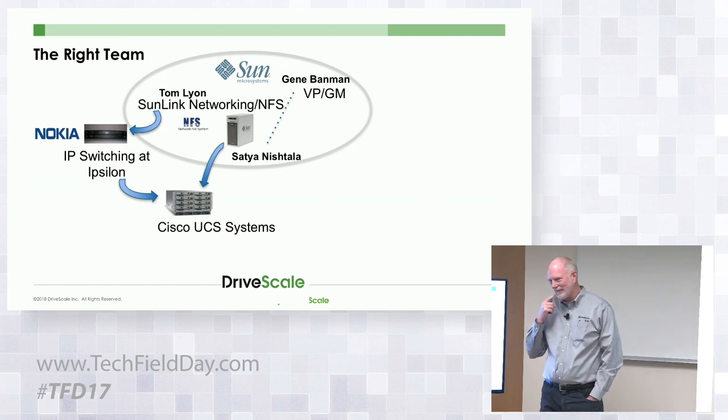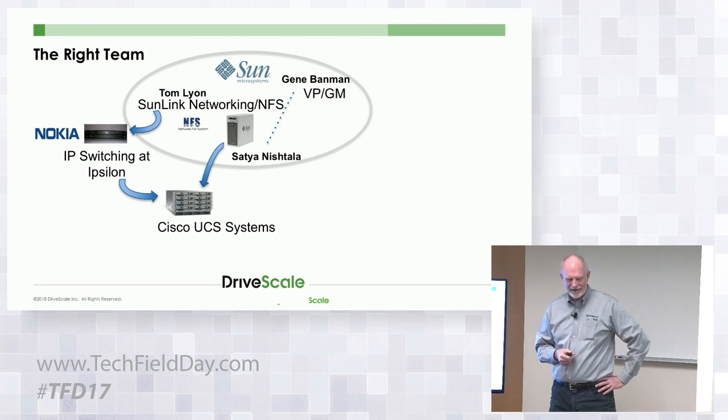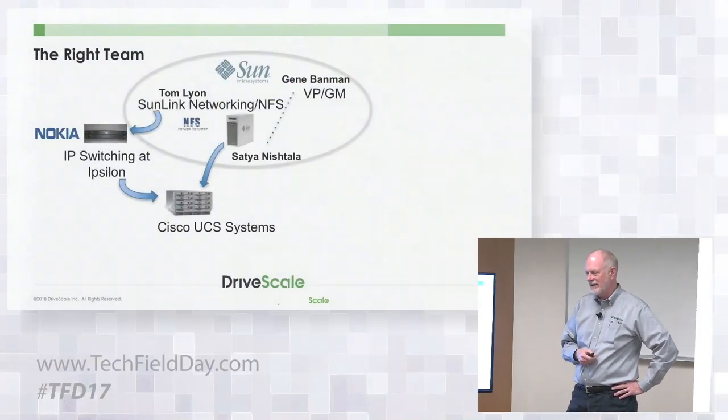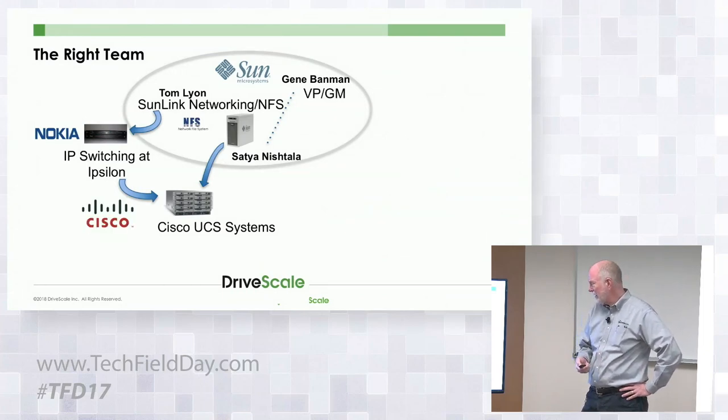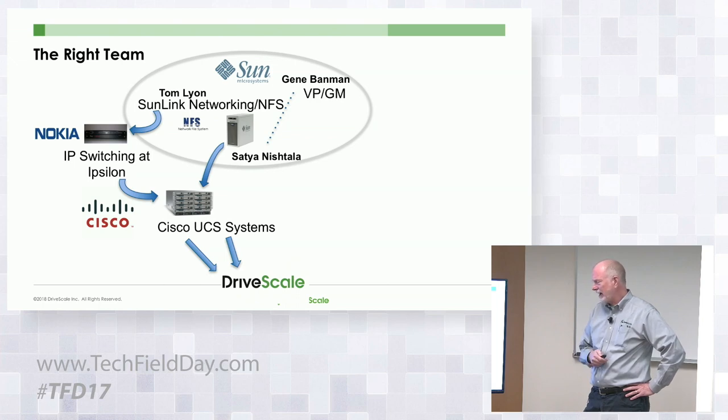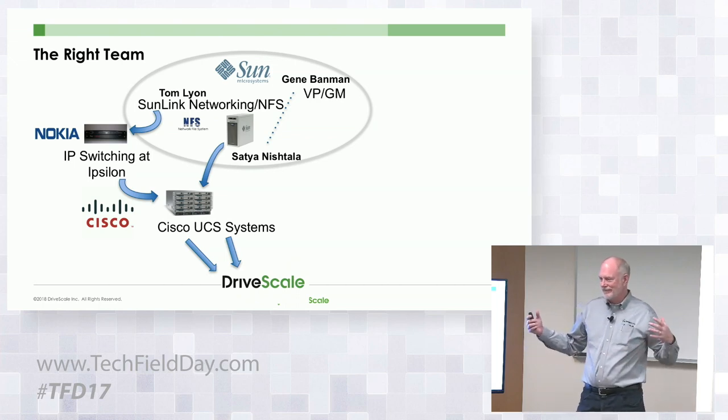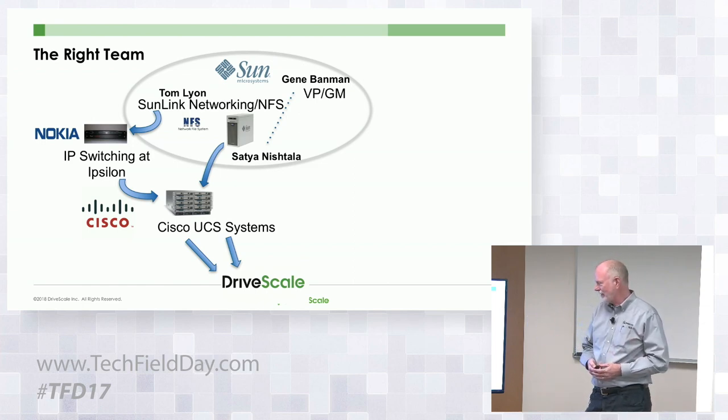Tom and Satya became early employees at a Cisco spin-in called Nuova Systems — Tom was employee number one. They built an integrated blade server chassis with embedded networking, Tom being the networking guy and Satya the systems guy. Before they could even announce their product, they were bought by Cisco and became the core of the Cisco UCS product line. Satya went on to be the architect for Cisco UCS for eight years, doing five generations of UCS designs. Satya then had the idea of disaggregating compute from storage and doing composability, and they founded the company in 2013.